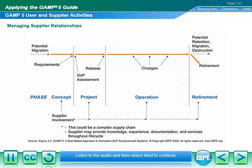All phases of the computerized systems lifecycle require cooperation between the regulated company and external and internal suppliers, including IT and engineering. Both regulated companies and suppliers have important roles to play in ensuring that suitable computerized systems are deployed as part of regulated activity.